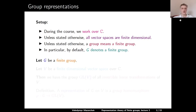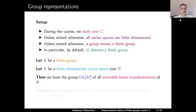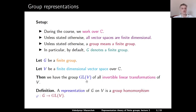Let G be a finite group and V a finite-dimensional complex vector space. Then we have the group GL(V) of all invertible linear transformations of V. Note that GL(V) is not a finite group anymore. Definition: a representation of G on V is a group homomorphism φ from G to GL(V).